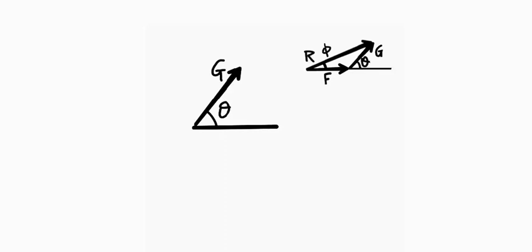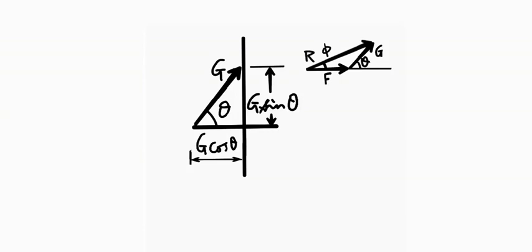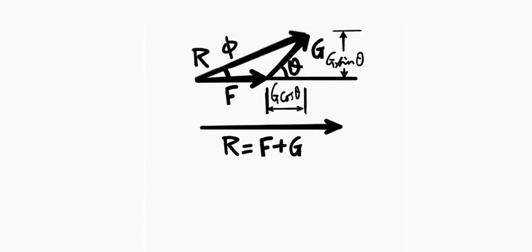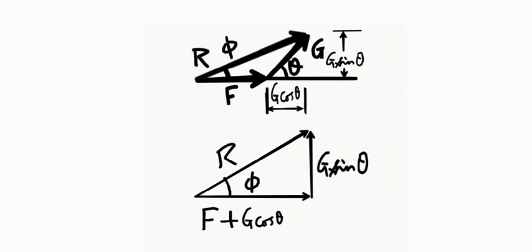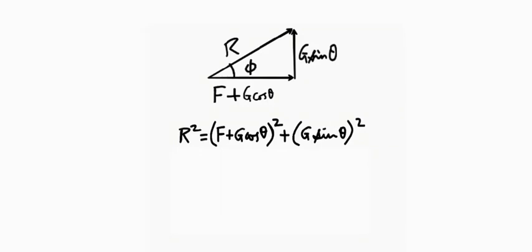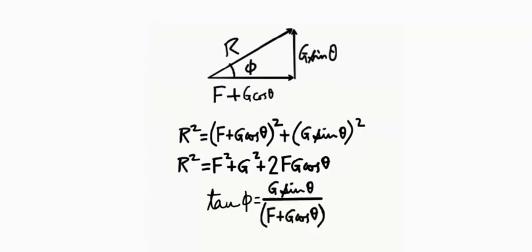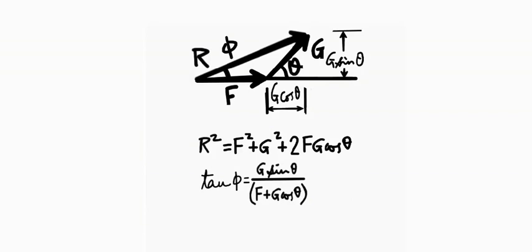Starting with vector g at angle theta to f, we draw a perpendicular to the direction of f and find the horizontal component of g along f, which is g cos theta, and the vertical component of g perpendicular to f, which is g sin theta. We can simplify this with a right-angle triangle where f plus g cos theta is the base, g sin theta is the height, and r is the hypotenuse. By the Pythagorean theorem: r² = (f + g cos θ)² + (g sin θ)², which simplifies to r² = f² + g² + 2fg cos θ. The direction of r is given by tan φ = g sin θ / (f + g cos θ). This is how we represent the addition of non-collinear vectors.